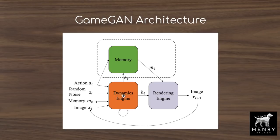The Dynamics Engine is an LSTM trained in the Generative Adversarial Network framework with three adversarial losses. Overall, GameGAN is a three-stage process. The Dynamics Engine takes in the action from the user, the previous memory vector, the image at the previous time step, and a randomly sampled noise vector. It uses this to update the cell state and hidden state in the LSTM way.